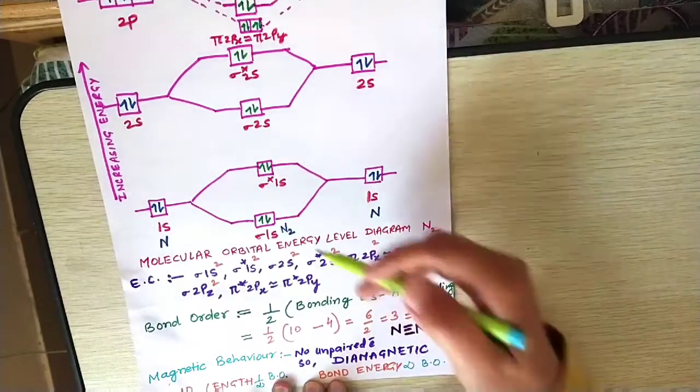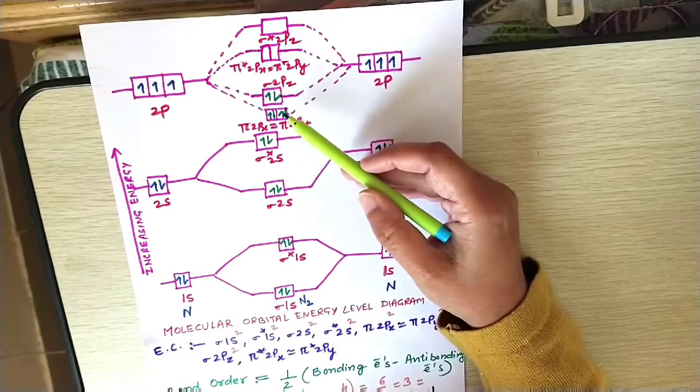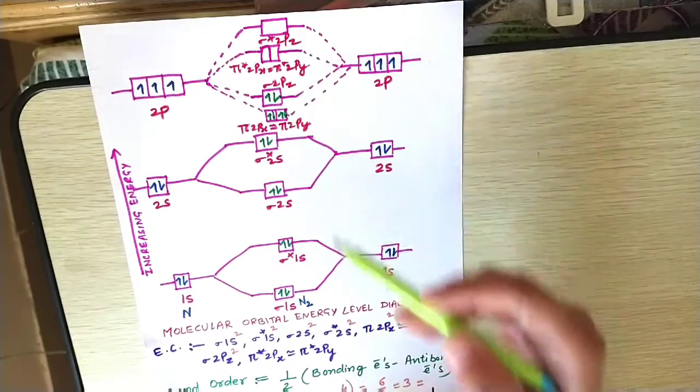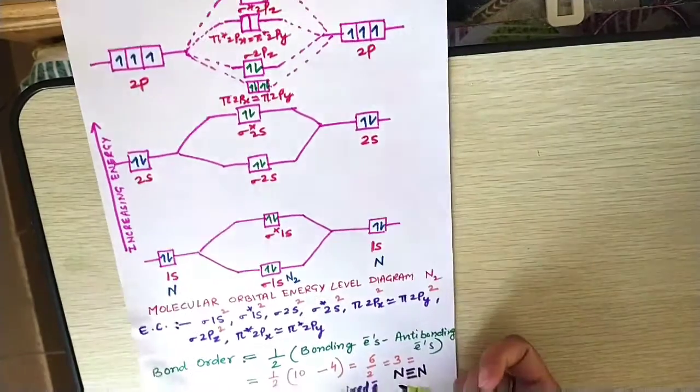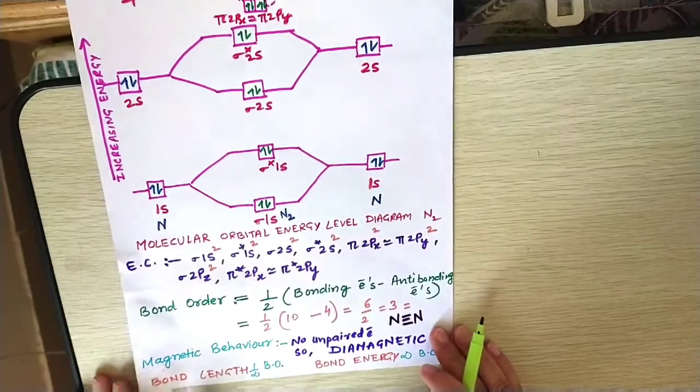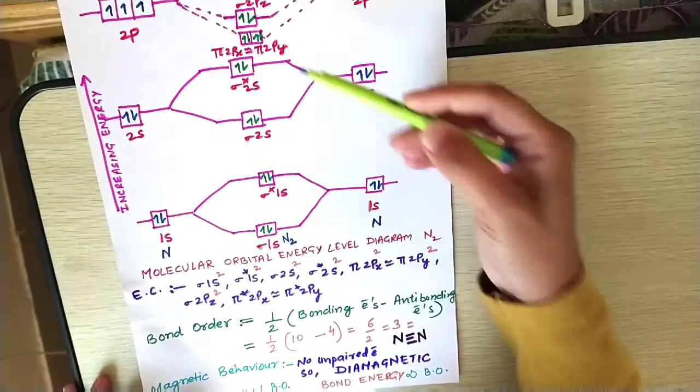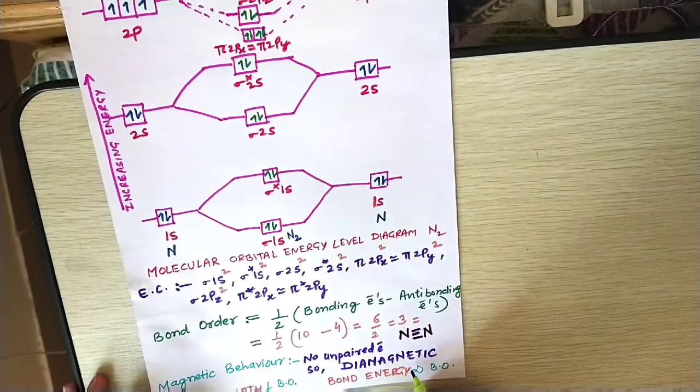Suppose students, if any of the orbital is having unpaired electron, then the molecule will be paramagnetic. Here all the electrons are paired in every orbital, every filled up orbital. So it is a diamagnetic molecule.